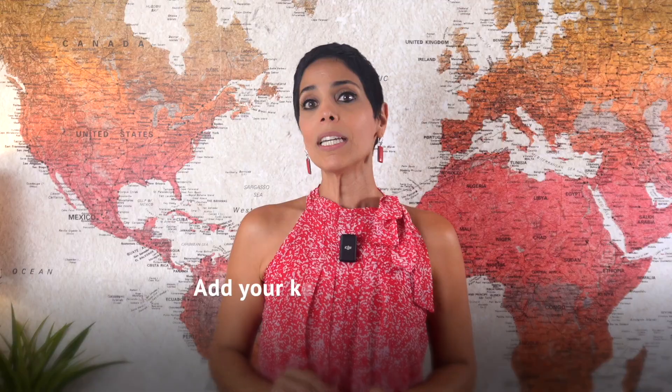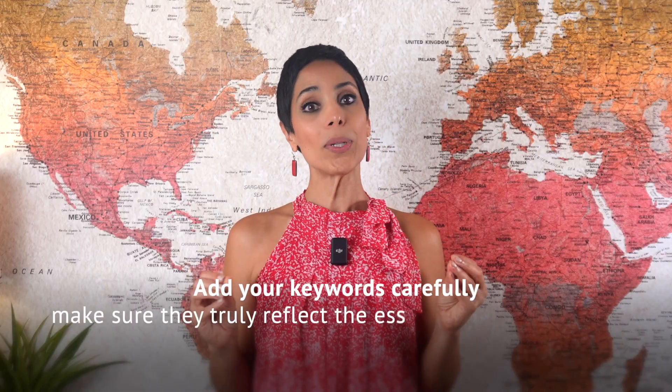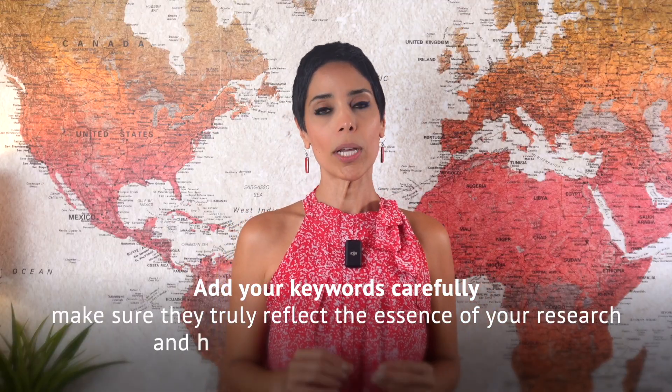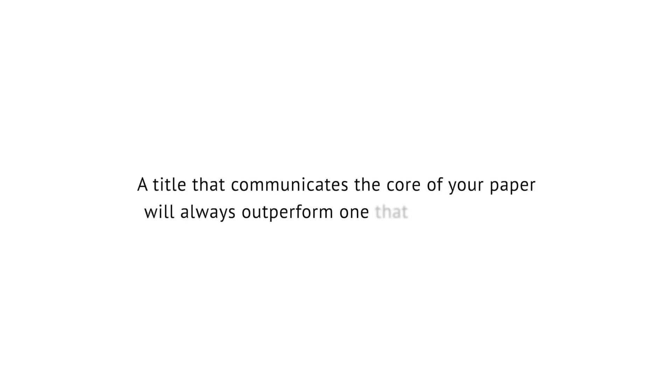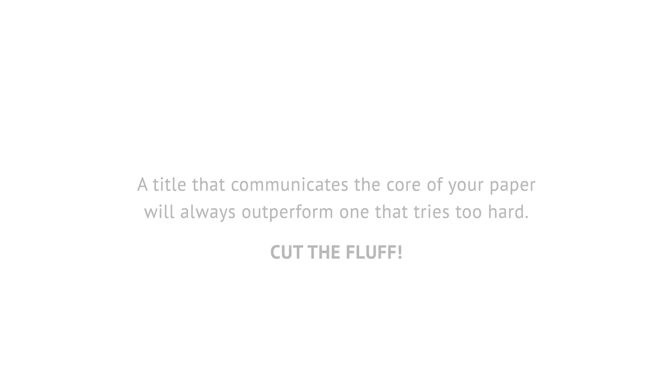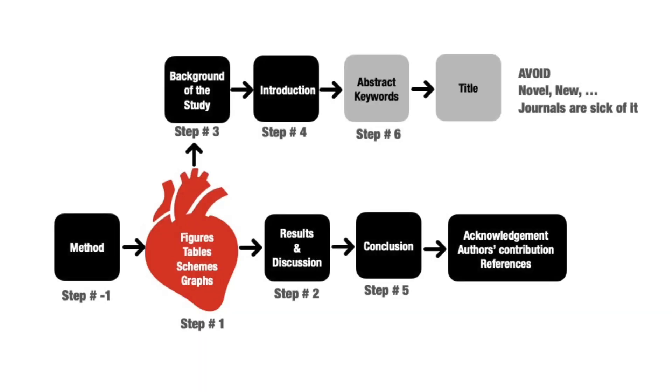Add your keywords carefully — make sure they truly reflect the essence of your research and help your article get discovered. When it comes to your title, keep it clean, sharp, and realistic. A title that communicates the core of your paper will always outperform one that tries too hard. Cut the fluff. Avoid self-praising adjectives like 'novel,' 'innovative,' or 'new.' If your work weren't novel, it wouldn't be suitable for journal submission in the first place.